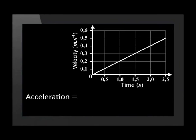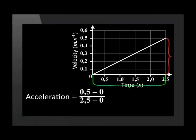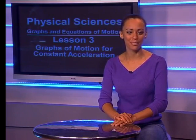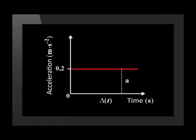Let's do this now. The total change in velocity is 0.5 meters per second, and the total change in time is 2.5 seconds. So, acceleration equals 0.5 divided by 2.5, which equals a constant acceleration of 0.2 meters per second squared. Let's now use this information to draw an acceleration versus time graph. Since the acceleration is constant at 0.2 meters per second squared, we get a horizontal line through 0.2 on the y-axis.